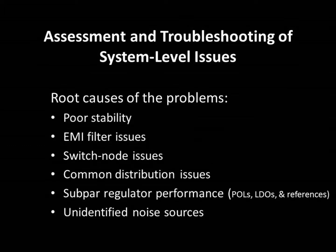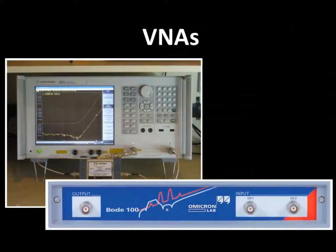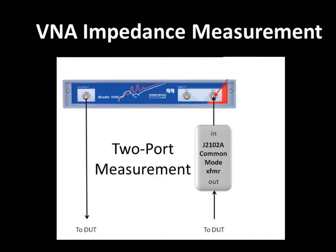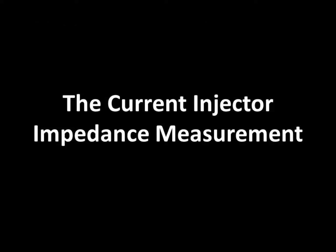The causes of customer issues are generally covered in this very short list. In two previous videos, we discussed the use of Vector Network Analyzers, or VNAs, and making impedance measurements using either one-port or two-port test configurations. We have one more method of measuring impedance available to us, another form of VNA measurement, and that is the current injector measurement.